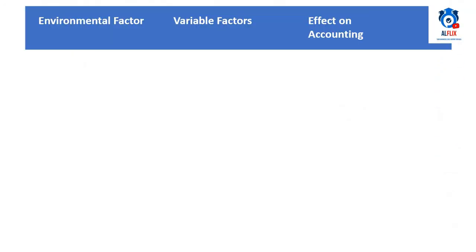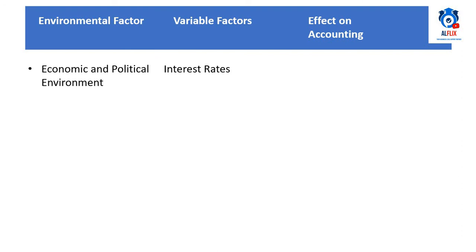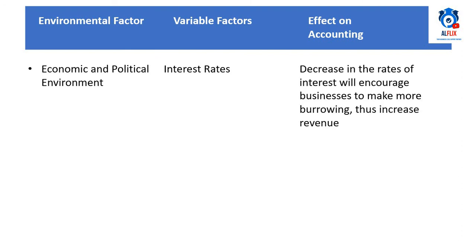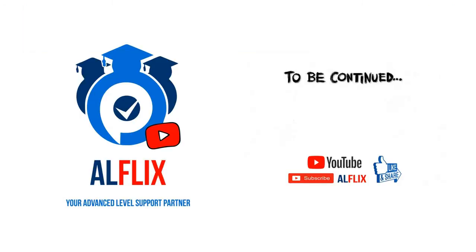Economic and political environment refers to the decisions taken to prepare and implement economic policies of a government. An example of a variable factor is interest rates: a decrease in the rates of interest will encourage businesses to make more borrowings, thus increasing revenue.